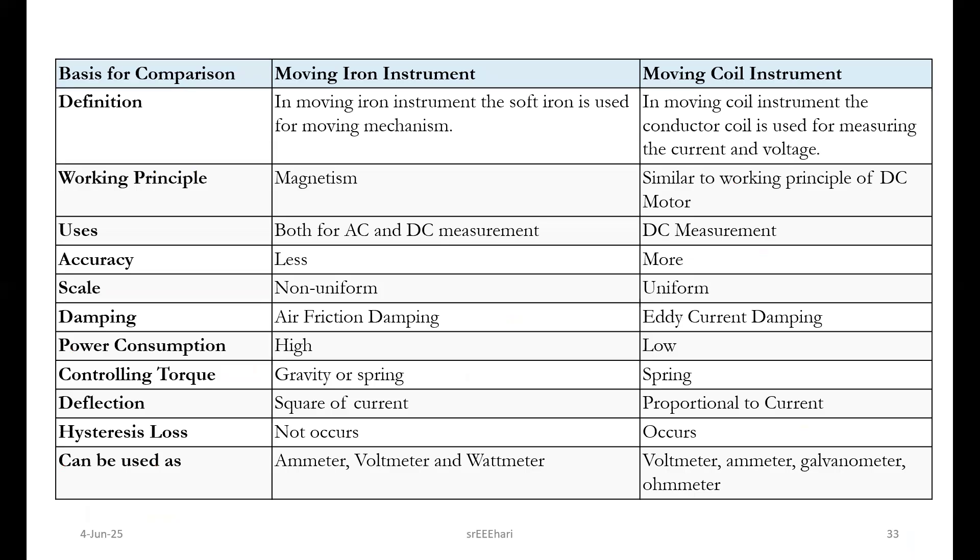These are the different comparisons between MCB and MI. Don't forget the principles. Working principle here is magnetism, whereas this one is similar to DC motor, F equal to BIL sine theta. In this one also, scale is non-uniform, whereas this one is uniform.